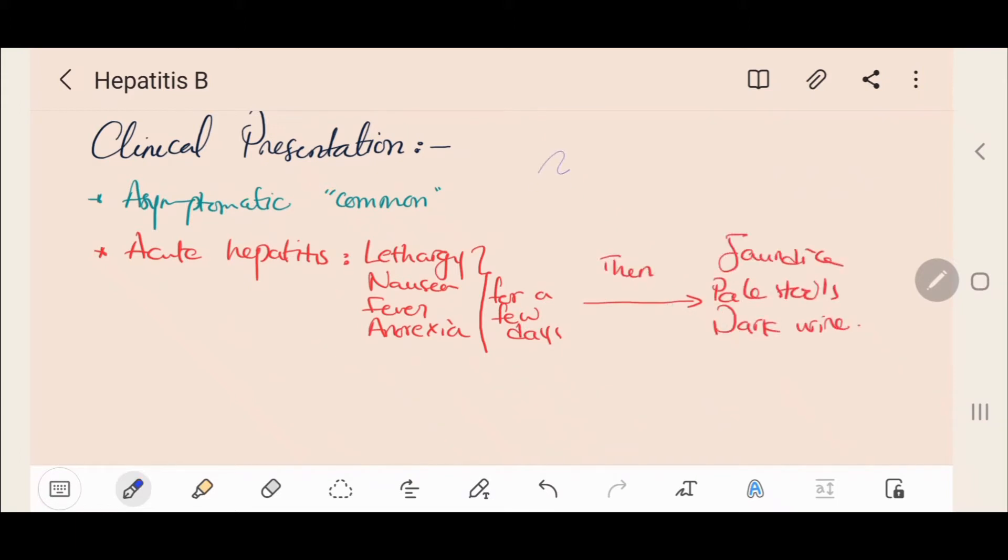Incubation of Hepatitis B is 45 to 180 days, the mean is 60 days. Chronic Hepatitis is infection lasting over 6 months and can be lifelong.